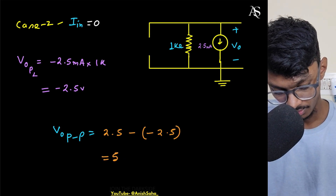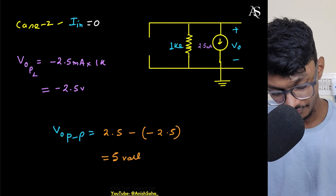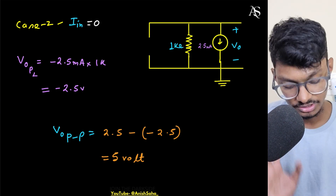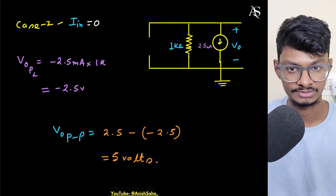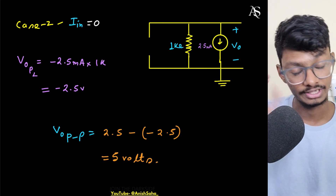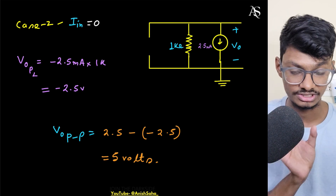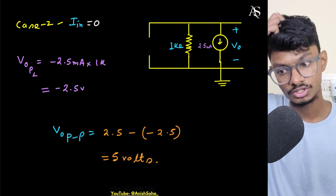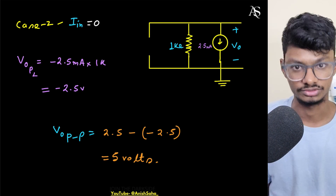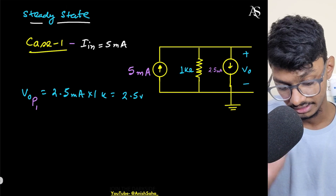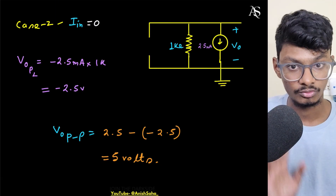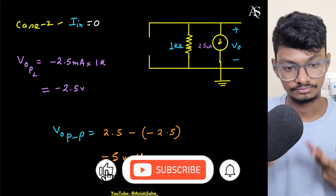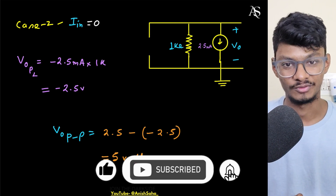So the answer is 5 volts. If you couldn't follow, I'll link my pulse response marathon video — I've explained pulse responses for RL and RC circuits in detail there; that one was for voltage sources, but you can apply the same concepts for current sources. Don't forget to like the video, and I'll see you in the next one. Thank you for watching.